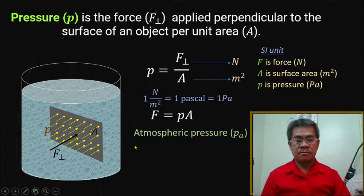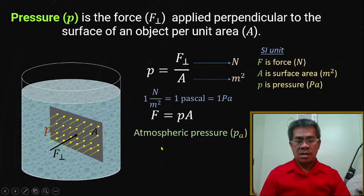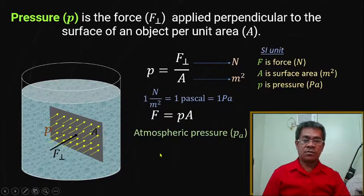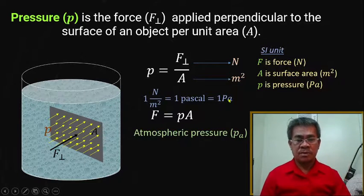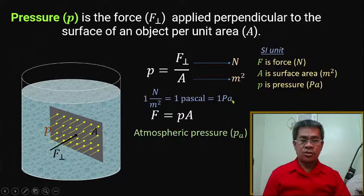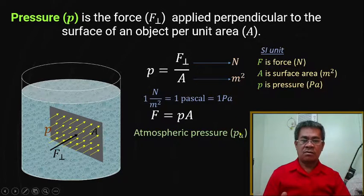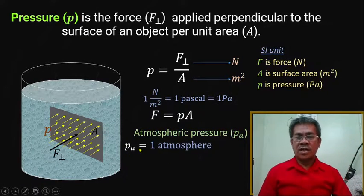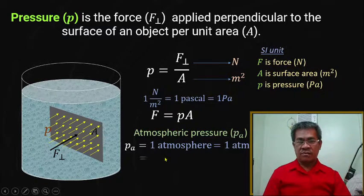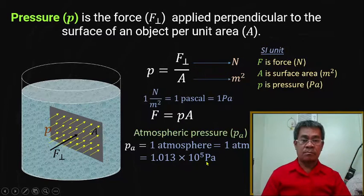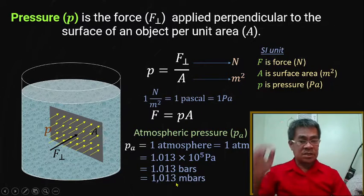Remember that the earth's surface experiences pressure coming from the atmosphere — we call this atmospheric pressure, symbolized as lowercase p sub a. Do not confuse this with the unit of pressure Pa, which is a capital P followed by capital A. One atmosphere is equivalent to 1.013 times 10 to the 5 pascals, and this is also equal to 1.013 bars, which equals 1013 millibars.